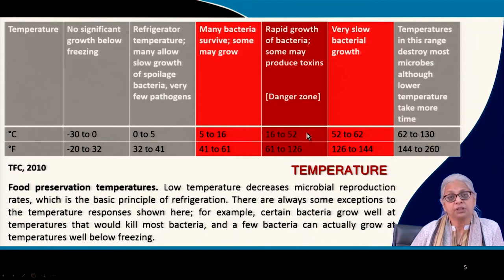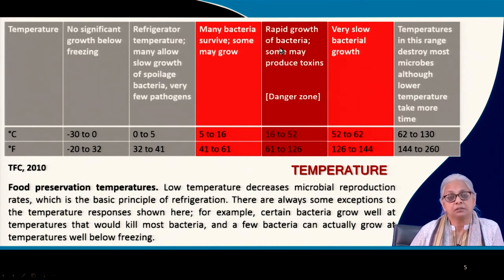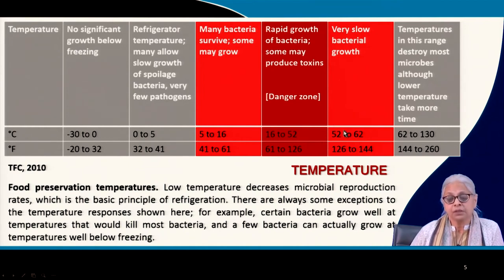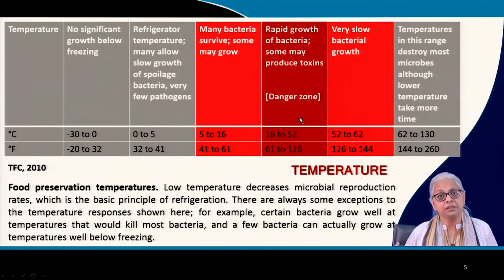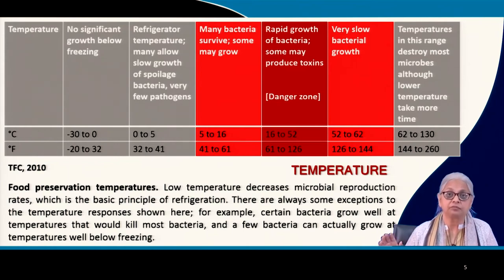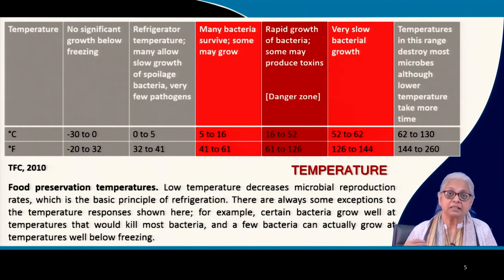If you leave food at room temperature — anywhere from 25 to 40 degrees centigrade in our country — you will get rapid growth of bacteria. Food spoils very easily if not refrigerated, possibly within 24 hours. The bacteria, fungi, and other organisms that grow under these conditions can be pathogenic. Pathogenic bacteria tend to grow most under these conditions, some may produce toxins — endotoxins or exotoxins — causing food poisoning. This is the danger zone.